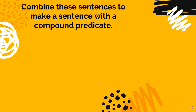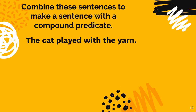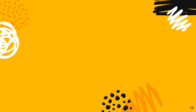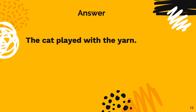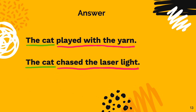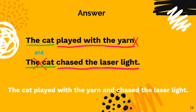Let's practice combining some more sentences: 'The cat played with the yarn' and 'The cat chased the laser light.' Pause this video and combine these sentences to form one sentence with a compound predicate. The subject is the cat, and the predicates are 'played with the yarn' and 'chased the laser light.' To combine these sentences, I will eliminate the second 'cat' and the period after 'yarn' and add the conjunction 'and,' to make: 'The cat played with the yarn and chased the laser light.'